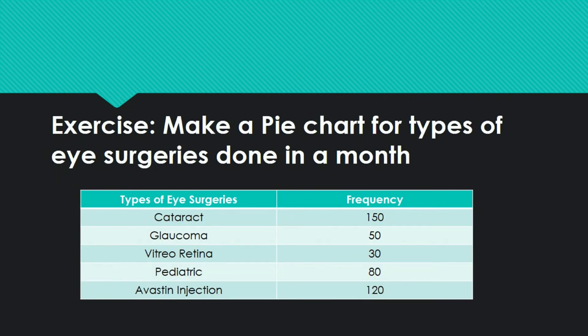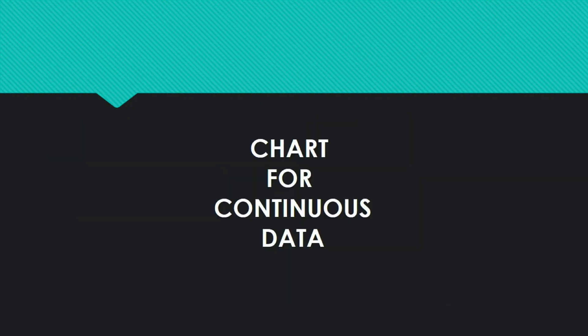Excel builds the pie chart for you in a single minute once you enter the data. The pie chart is for qualitative data — nominal or ordinal data. Exercise assignment: Make a pie chart for the types of eye surgeries. I have listed surgery names including Avastin injection with their frequencies. Practice drawing it — I have placed one question per graph type for you to get familiar with constructing charts.